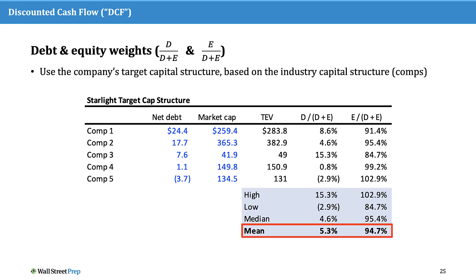It's advisable to take into account what we believe will happen indefinitely to the company's capital structure. For example, we might be putting a lot of leverage on this company today if it's an LBO, but will we be levering the company at a high level indefinitely? If we will, then we may want to make sure the target capital structure reflects that. But if this level of leverage is only for the next handful of years, we want to use the industry target capital structure.